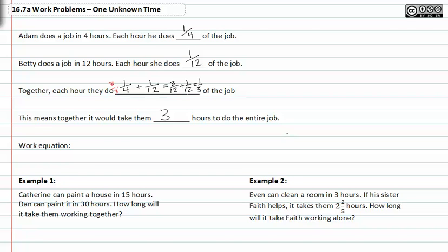So here's the work equation. When we're talking about work equations, we always set them up as fractions. Because we're talking about the partial amounts of the job equaling the total. So we have part A plus part B equals one over the total.